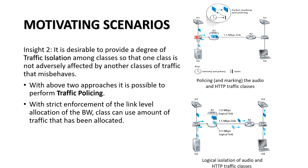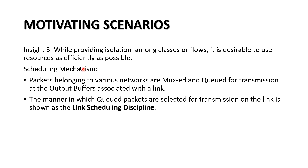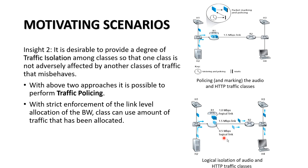HTTP and video are simultaneously sent from r1 to r2. If the audio bit rate increases beyond 1 Mbps, it will block the transmission of HTTP. This is called traffic policing, which bars excess audio packet transmission and maintains the rate of audio packets at 1 Mbps. Insight 3: while providing isolation among classes, it is desirable to use resources as efficiently as possible — so if audio uses 1 Mbps, HTTP should simultaneously use the remaining 0.5 Mbps for transmission from r1 to r2.